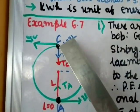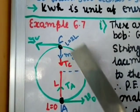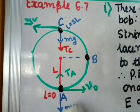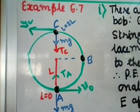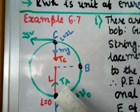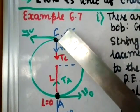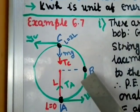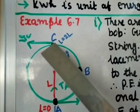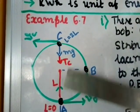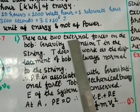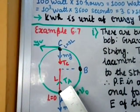At point A, tension T_A acts upward and gravitational force mg acts downward. Taking the lowest point A as the reference level where potential energy equals zero, the height at point C is 2L and at point B is L. There are two external forces on the bob: tension and gravitational force mg.